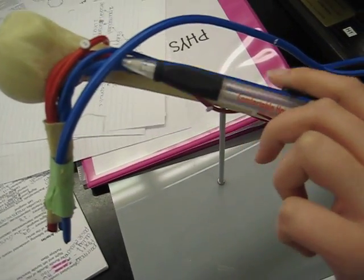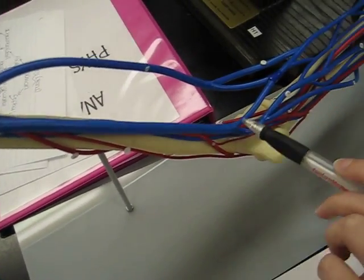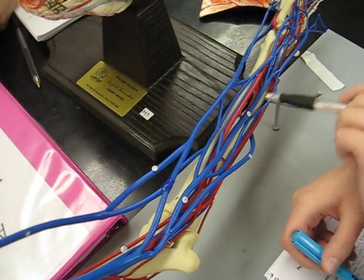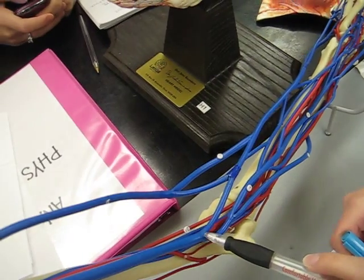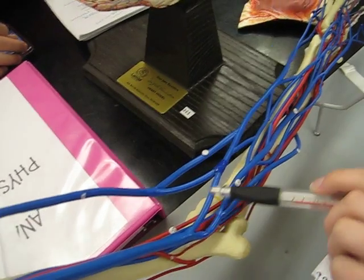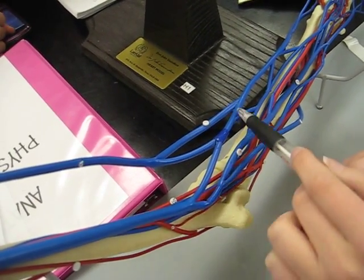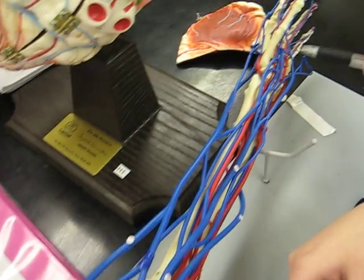The axillary becomes the basilic, which also continues straight down towards the palm. But right here, we also have the median cubital, where both the cephalic and the basilic are able to join together.